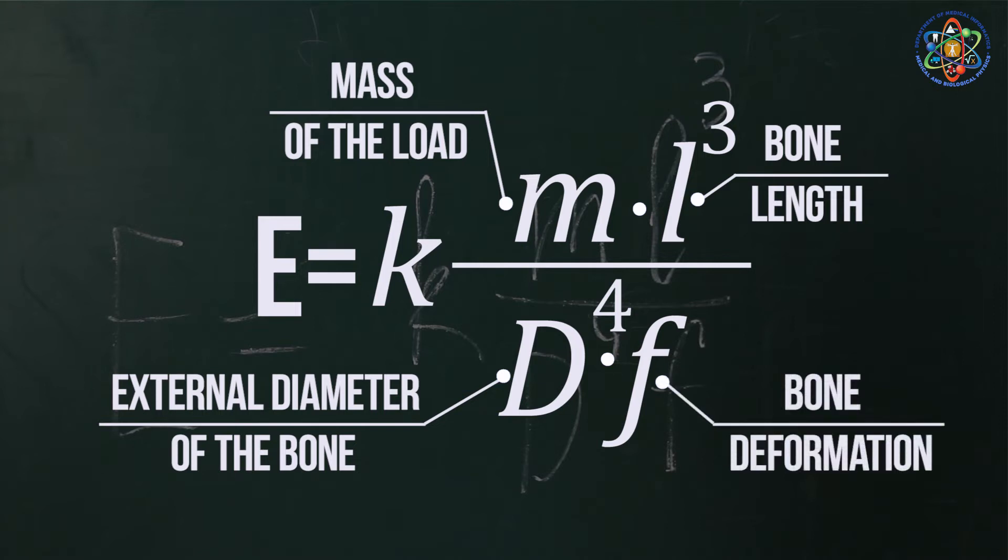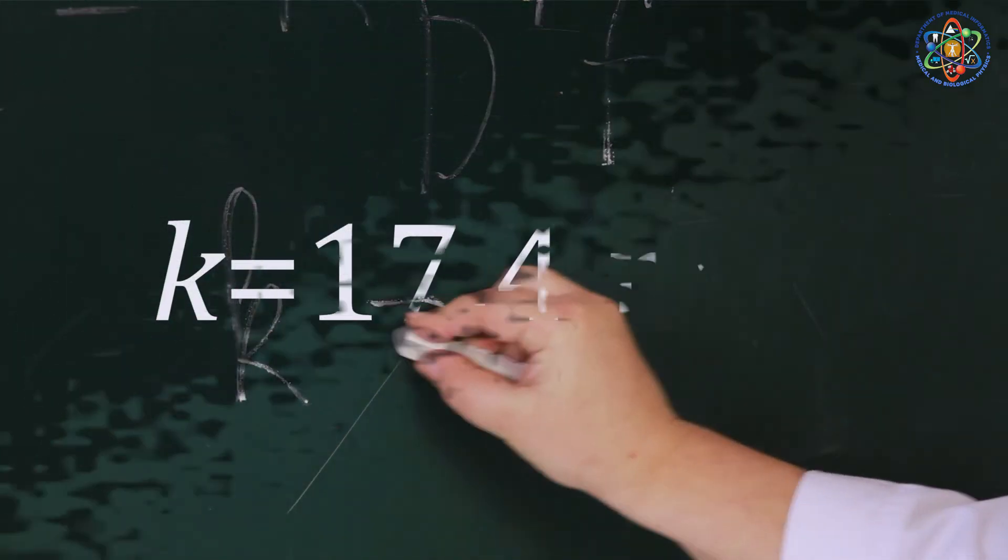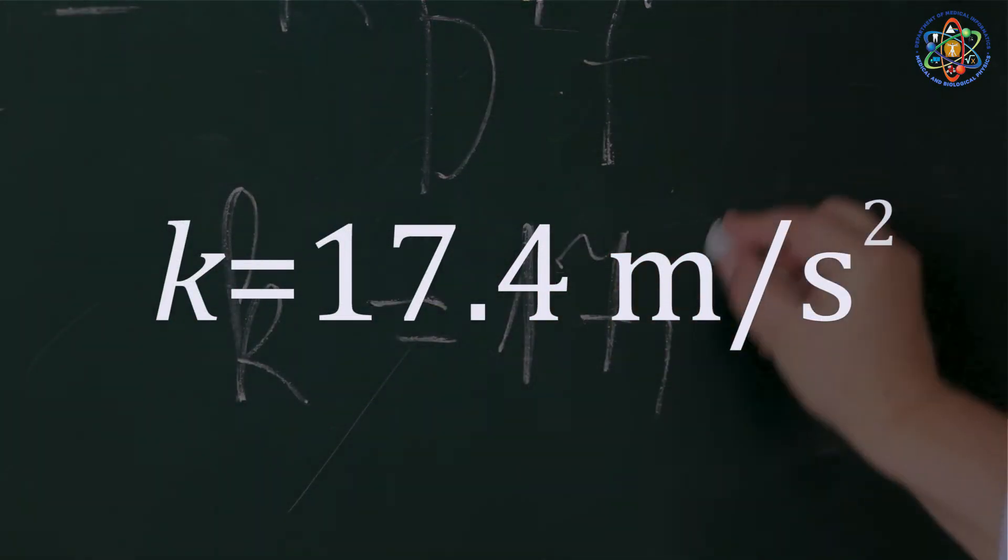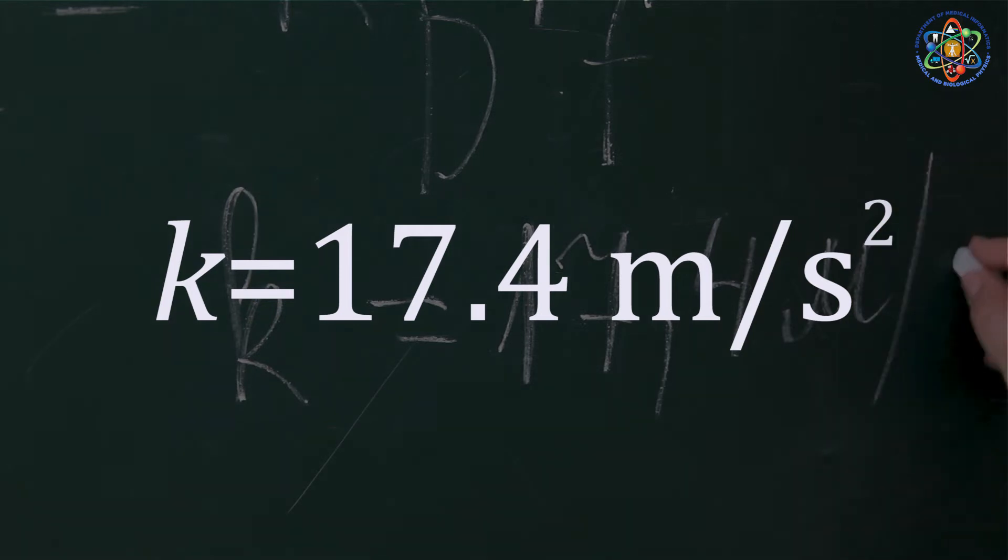F is the value of the bone deformation, measured with the help of a dial gauge. K equals 17.4 meters over square seconds.